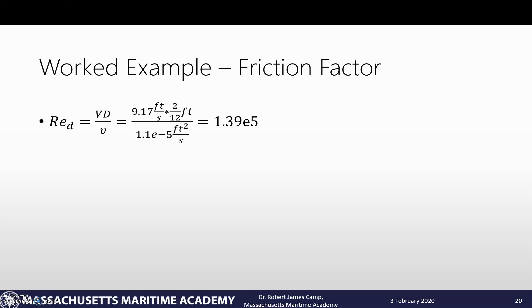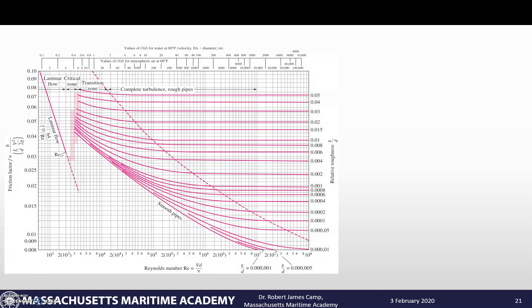That is turbulent flow. If we look at it, epsilon over D is given in the problem as 0.001. So if we go to the Moody chart we'll get an f value of 0.0216.